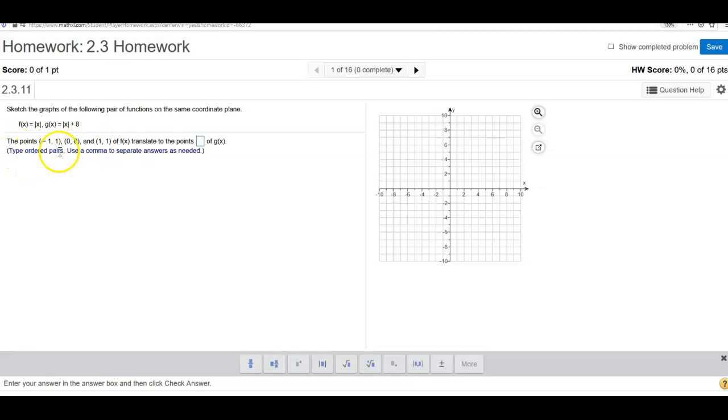So the first question says the points negative 1, 1, 0, 0, and 1, 1 of f of x translate to the points of, we looked at an example in class. You can also go to the last class session and pull that up and see how we did that.